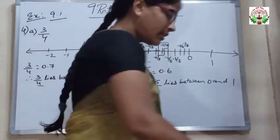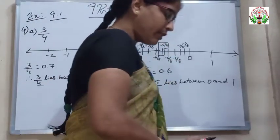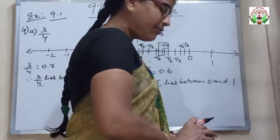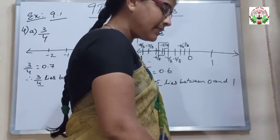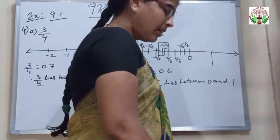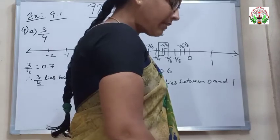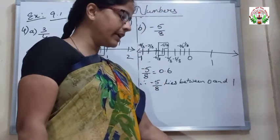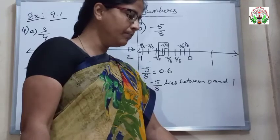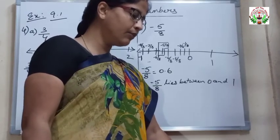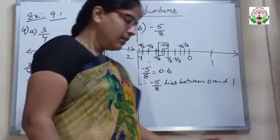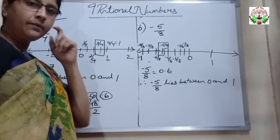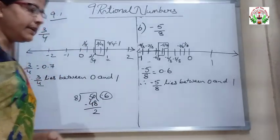In this way, you have to represent the given rational numbers on a number line. I hope you can complete the third and fourth ones. Let us continue in our next period. Thank you.